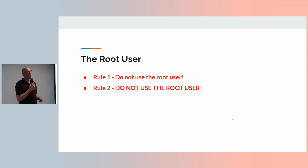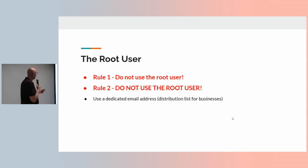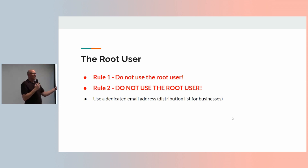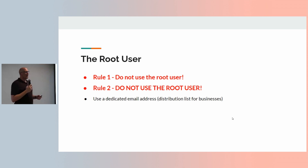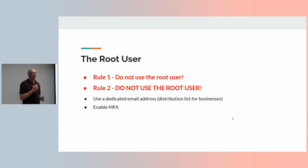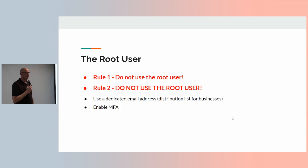That applies even if you're just using it for your hobby account. Use a dedicated email address — not your actual email address. Something like your address plus AWS, or AWS at your own domain. Make it distinct because it helps with routing emails, like billing notices. Your root user should have multi-factor authentication enabled — please enable MFA — and then lock the details securely away.